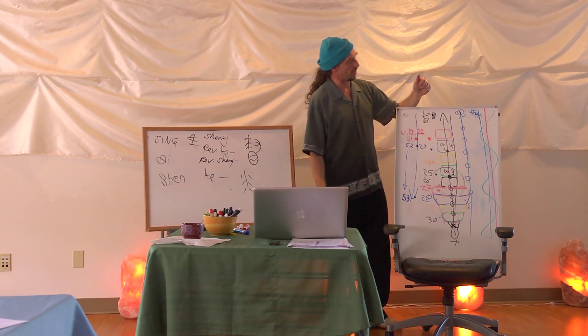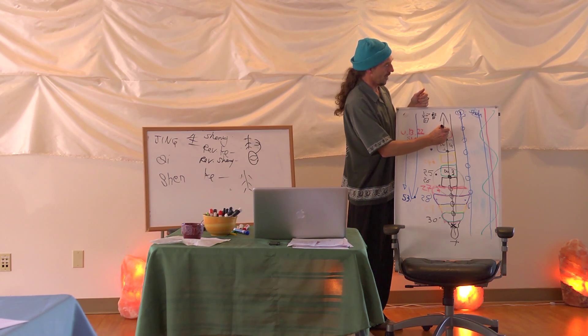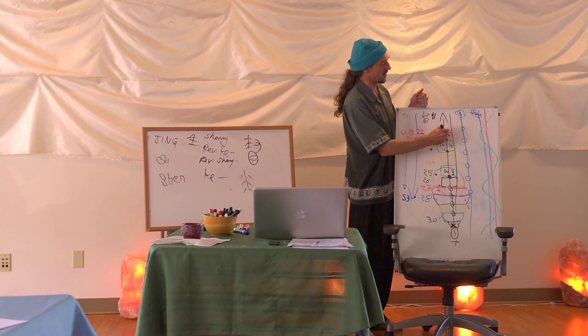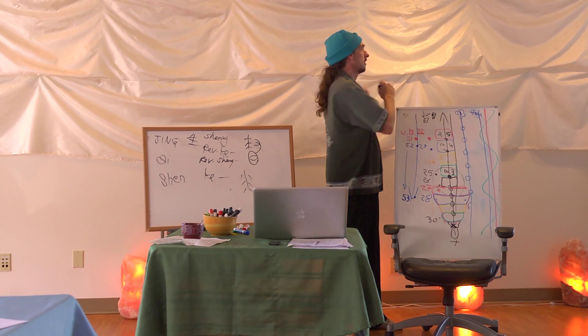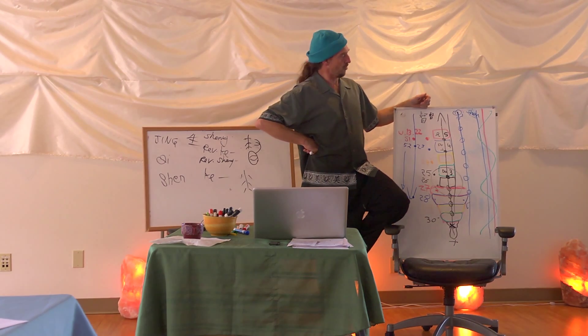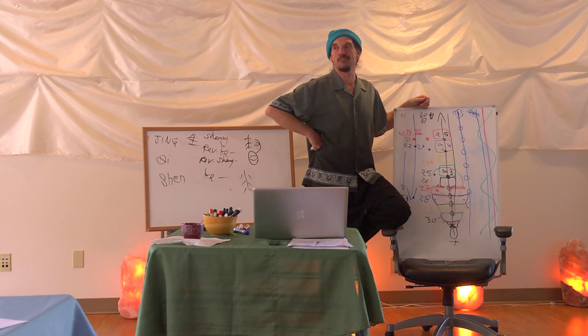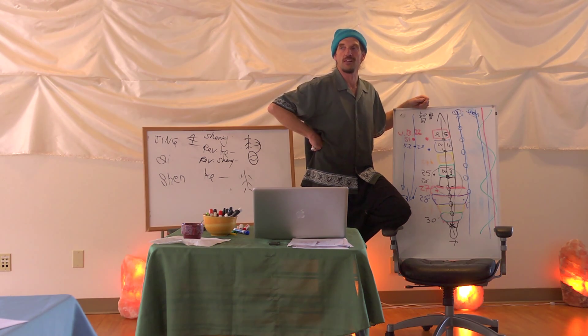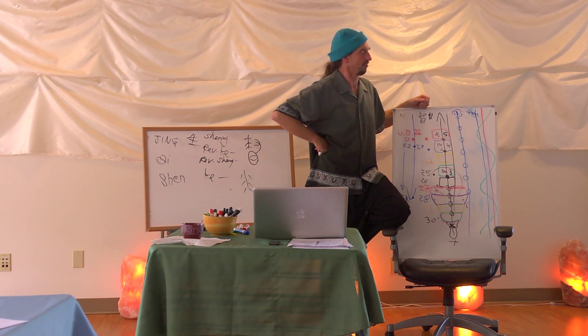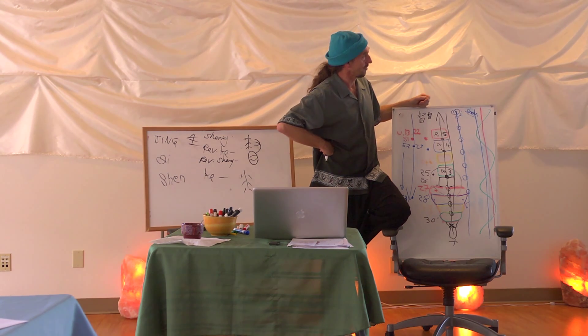There is one other Du channel point that we need to pay attention to, and that's this one here, Governor Vessel 5, which is called Xuan Shu. And Xuan means pivoting, circling, or turning. And that might really just be an anatomical expression, an expression of the functionality of L1 relative to T12 that has a lot to do with rotation. I don't actually have any sort of cogent comment about that, I don't think.